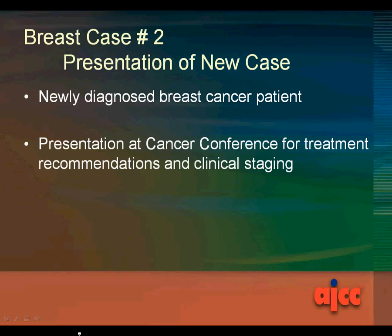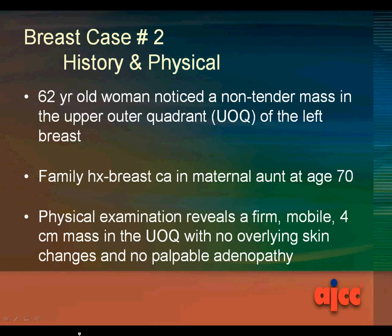This is a presentation of a new case — a newly diagnosed breast cancer patient being presented at cancer conference for treatment recommendations and clinical staging. This is a 62-year-old woman who noticed a non-tender mass in the upper outer quadrant of the left breast. Family history is breast cancer in a maternal aunt at age 70.